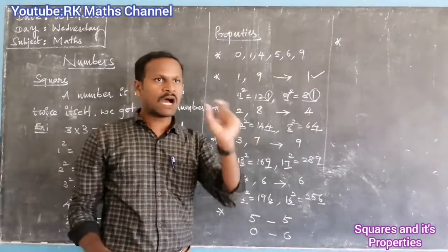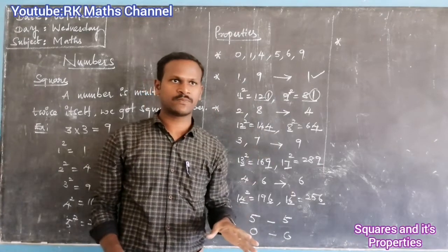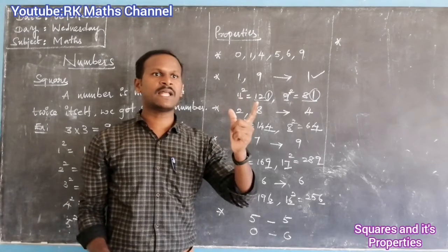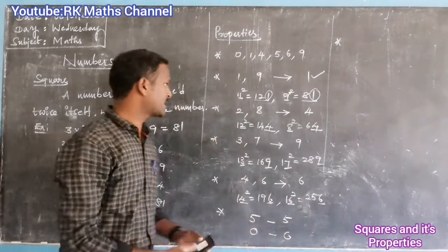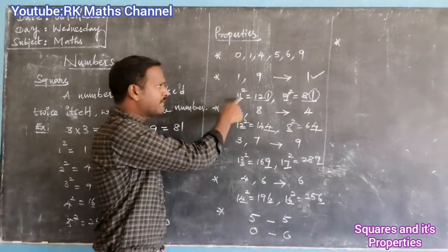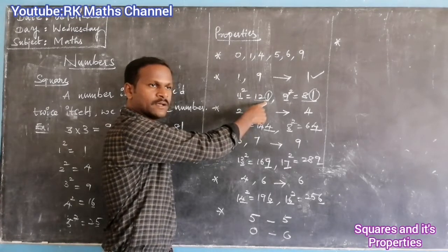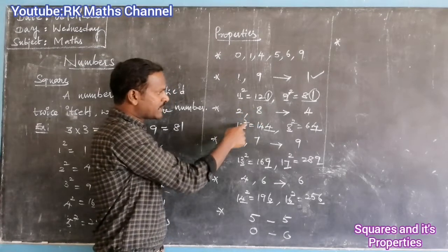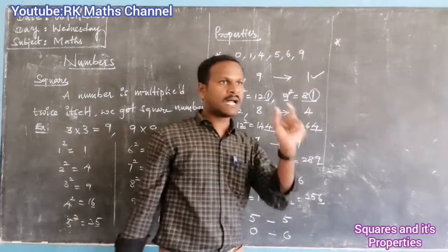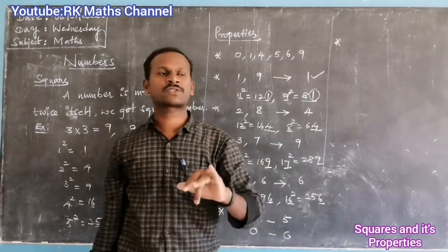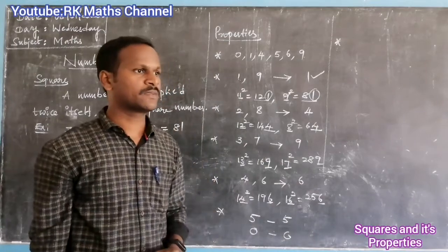Next property: if you square an odd number, the answer is an odd number. If you square an even number, the answer is an even number. For example, 11 squared is 121 which is odd, and 12 squared is 144 which is even.